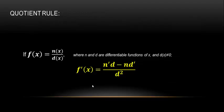Now for the quotient rule. I use n and d to represent numerator and denominator. Unlike the product rule, order matters here — you cannot switch the parts. The formula is: the derivative of the numerator times the denominator, minus the numerator times the derivative of the denominator, all over the denominator squared. Written as: (n'·d − n·d') / d².